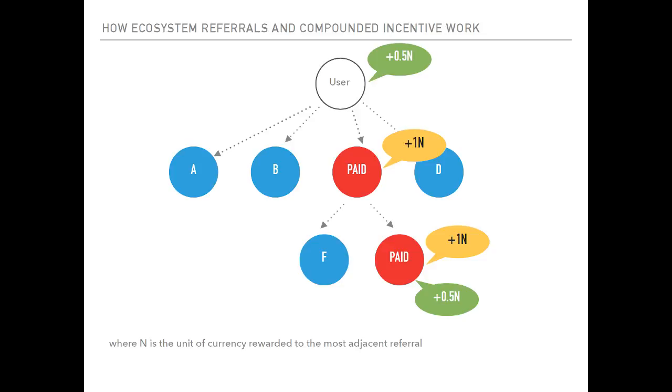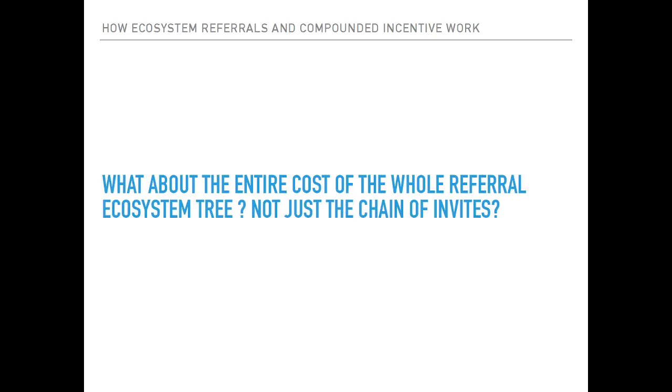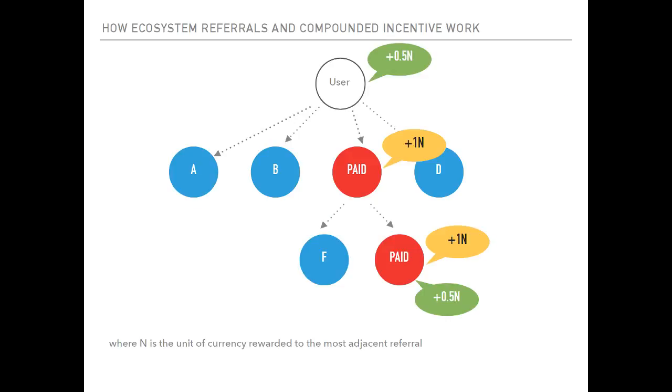You're going to have to reward, so it goes from 1 to 0.5, then 0.25, 0.125, and so on. But what about the entire cost of the whole referral ecosystem tree, not just a chain of invites? As you can see right here, this is a case that's not going to happen very often in real life where it's just a chain of invites.